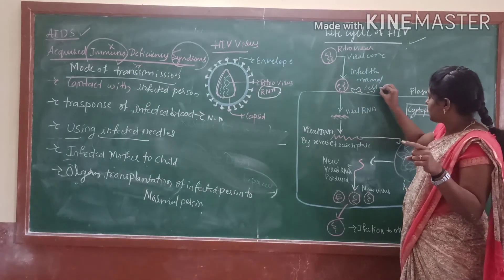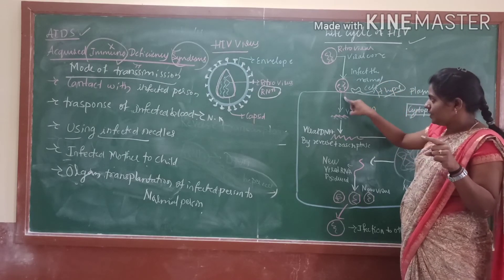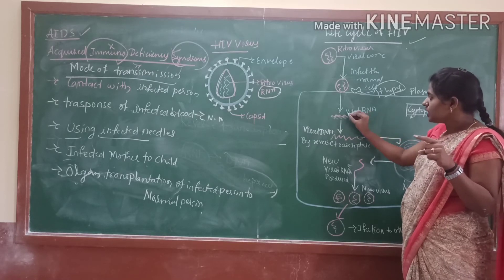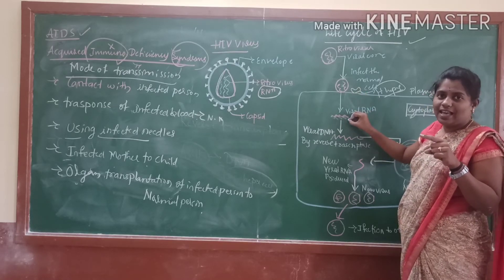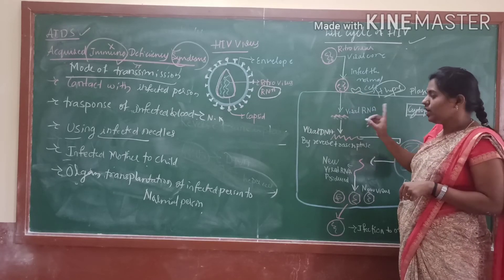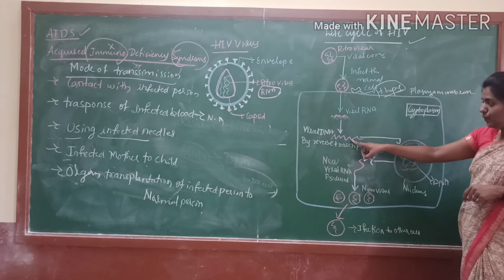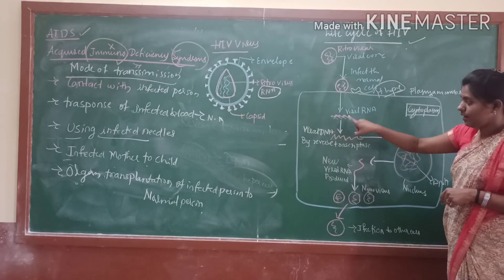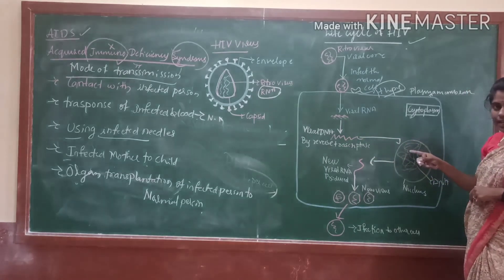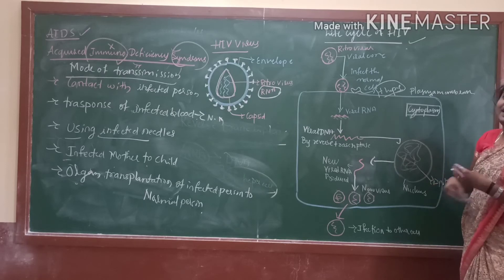After that, it is introduced into the cell. After that, the RNA is incorporated or enters into the cell. After that, with the help of reverse transcriptase, it is converted into viral DNA. Viral RNA to viral DNA. After that, it goes for DNA and changes our DNA. And they are replicated as DNA.